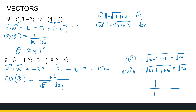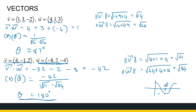So cos theta is minus 42 over root 21 times root 84. If you look at that fraction, it gives you minus 1. So where is cos theta equal to minus 1? Cos theta equals minus 1 at 180 degrees, so theta is 180 degrees. If you look closely at vectors V and W, W is a scalar multiple of V — W is minus 2 times V. That tells me W is in the opposite direction of V and twice the magnitude. An angle of 180 degrees makes sense. If it were a positive scalar multiple, the dot product would give an angle of 0 degrees.